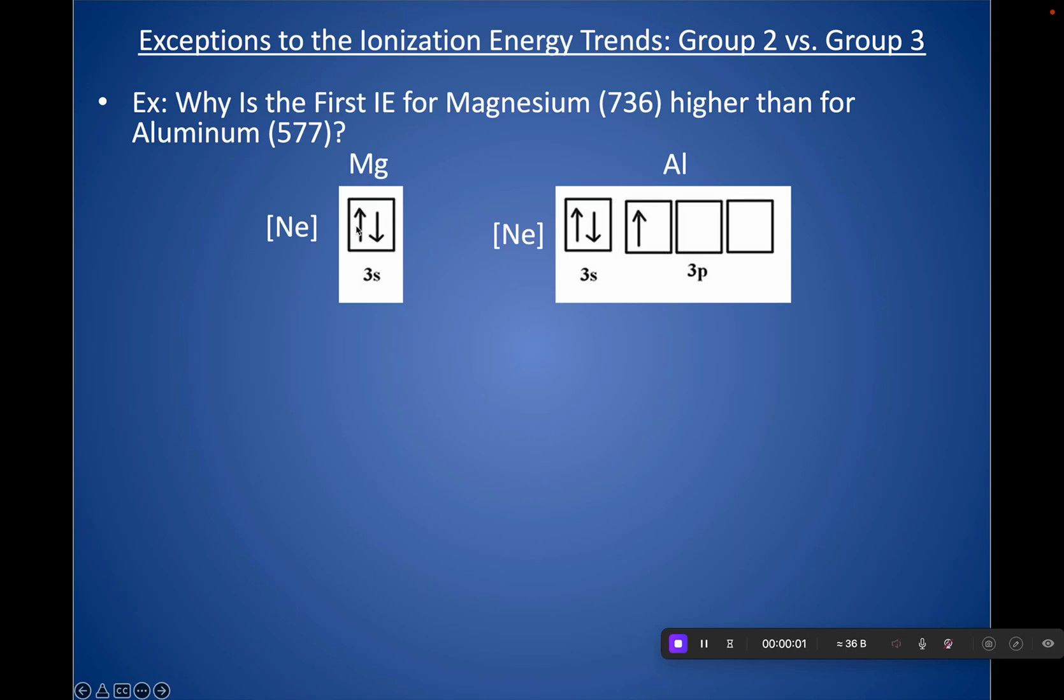First, make sure that you've drawn orbital notations for Mg versus Al, and let's investigate why is it easier to remove an electron from aluminum versus magnesium. We would expect ionization energy to increase across a period because you have the same shells but are adding a proton, so you've increased the effective nuclear charge. But there's actually a drop—you can see these numbers here in kilojoules per mole. There is a drop in ionization energy when you go from Group 2 to 13, or Group 2A to 3A.